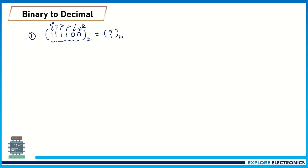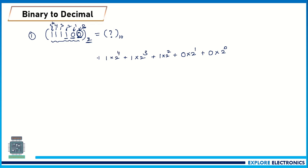We always need to keep in mind that the rightmost bit or rightmost digit is the zeroth position. So I take the rightmost 0 and multiply it by 2 power 0, because the base is 2 and this is the zeroth position. Then the next digit is also 0, so it is 0 into 2 power 1. Then 1 into 2 power 2, plus the next digit into 2 power 3, plus 1 into 2 power 4, plus 1 into 2 power 5.